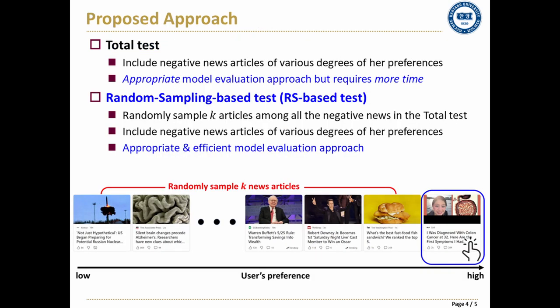To address the limitations of the imp-based test, we propose a simple way of evaluating news recommendation models by employing a total set of news articles, ignoring the impression log completely. In this way, negative articles of various degrees of her preferences will be included. We call this model evaluation approach a total test and regard it as an appropriate evaluation approach.